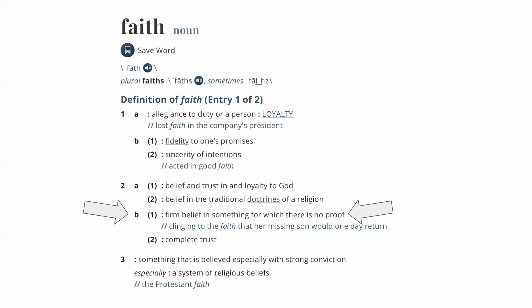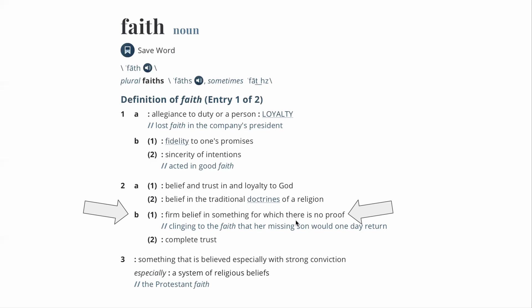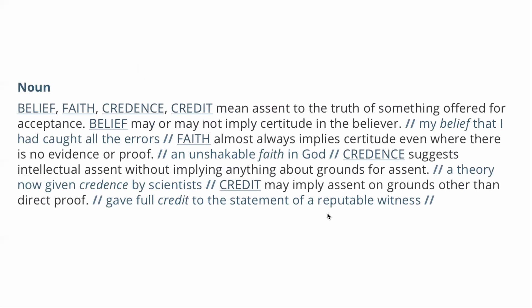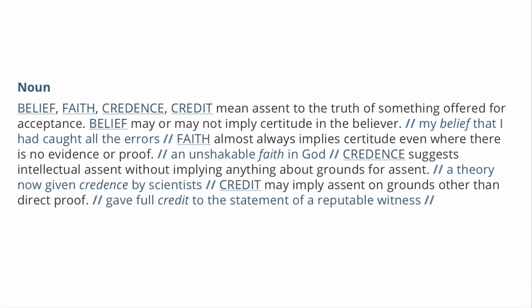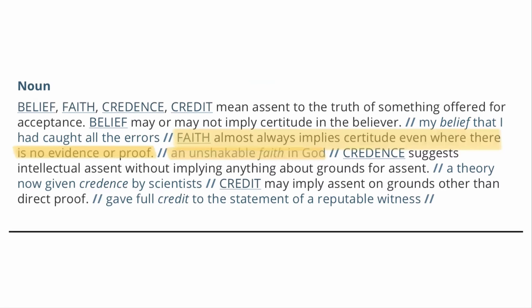That might be true, but I don't know what they mean by proof — and it gets more interesting when they say 'the doctrines of a religion' and 'belief or trust in God,' and then it's like, where there's no proof. Going further on the Merriam-Webster site, under 'belief, faith, credence, and credit,' faith almost always implies certitude even when there is no evidence or proof. So in the original definition it was 'no proof,' and now it's 'no evidence or proof' — they just keep ratcheting up all the things you don't know in order to have faith.